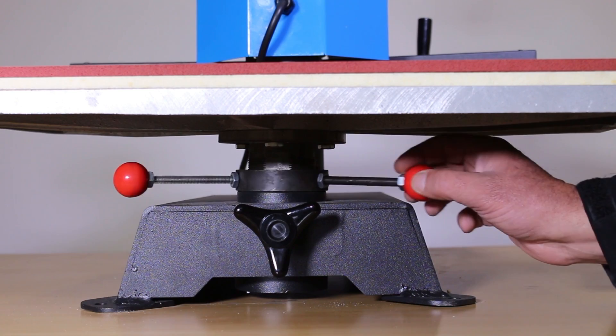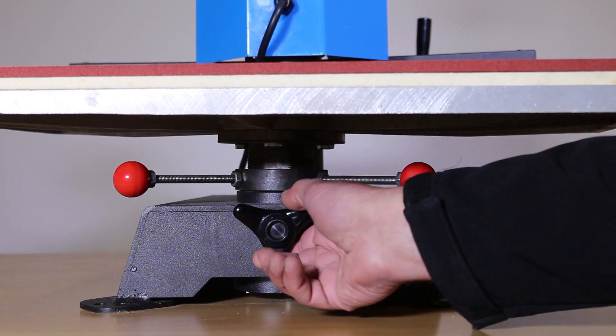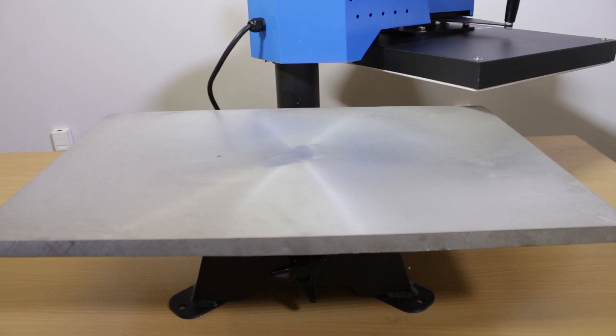This heat press features a 600 mm width and 400 mm depth surface, suitable for all t-shirts and other clothes like pants and jeans.